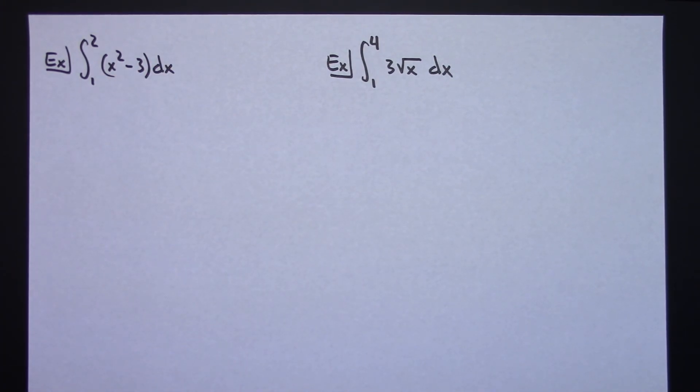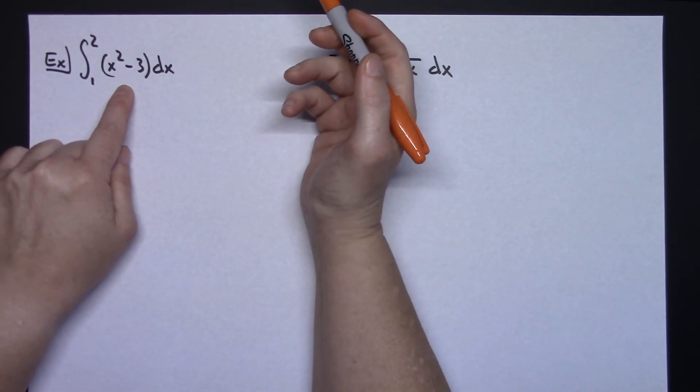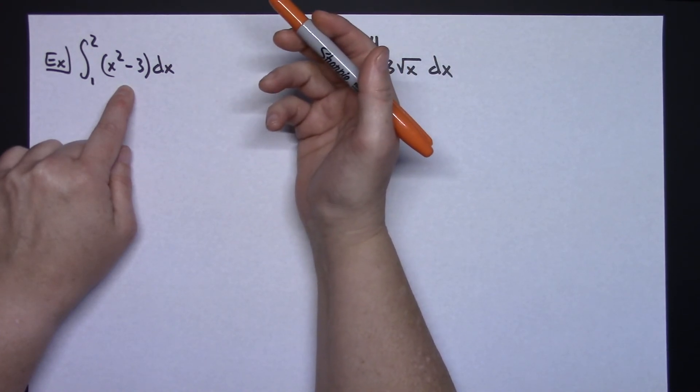Alright, so the very first thing is we have to find that antiderivative. In other words, we've got to integrate this function. Alright, I am assuming that you've done integration on those indefinite integrals.